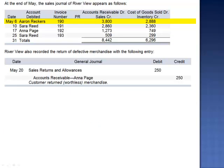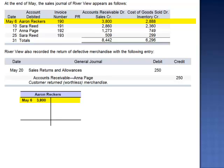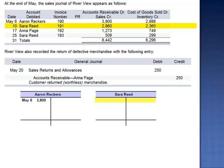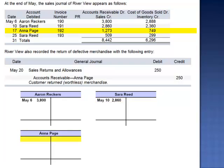The first customer is Aaron Reckers. On May 6th, Aaron is billed $3,800. We see the debit to accounts receivable in the sales journal. On May 10th, Sarah Reed is billed for $2,860. May 17th, Anna Page is billed for $1,273.